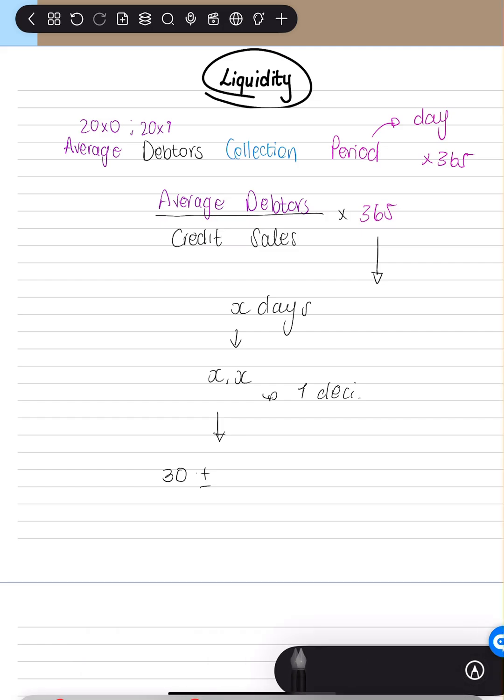Because you want debtors to pay quickly. The longer we have debts from debtors, the more likely it is to turn into bad debts. So it will turn into bad debts, which means money is written off, which means we never get money from those sales made. So bad debts from long debtors collection period. So you want it to be as short as possible.